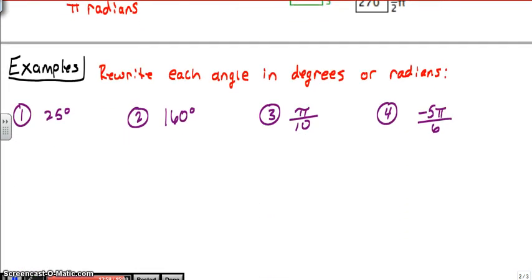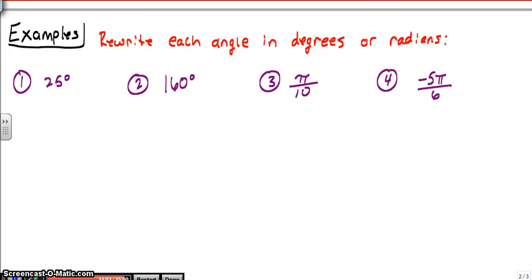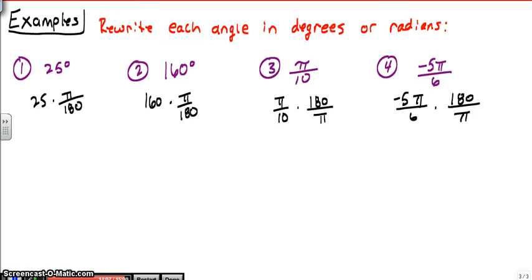So let's look at some examples. We're going to rewrite each angle in degrees or radians. To save time, I went ahead and wrote down the first step for each one of these problems. And all you're taking is the angle theta, which is given to you, 25 degrees, and you multiply it by the formula. So to go from degrees to radians, we multiply by π over 180. To go from radians to degrees, we multiply by 180 over π. And this should make sense because radians are measured in π. Degrees don't have π. So if I'm going from radians to degrees, I'm going to want my π's to cancel, just like they do right here.